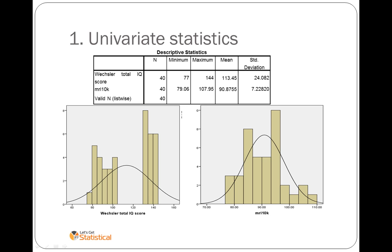IQ on the left is our independent variable and on the right brain size or MRI10K is our dependent variable. At this point we just report on the means and the standard deviations and we are assessing whether the dependent variable on the right is normally distributed.